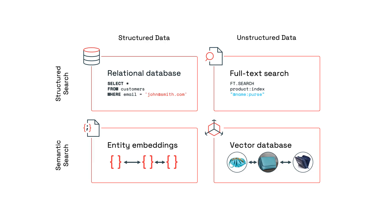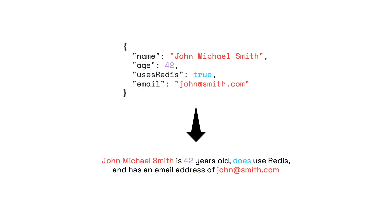Entity embeddings are best accomplished by using custom models that have been trained on your data in your domain. However, you can also get decent results by simply making the data into a sentence and using a sentence embedder to create the embedding, or sometimes just using the JSON as is. Then you load these embeddings into a vector database and look for matches.